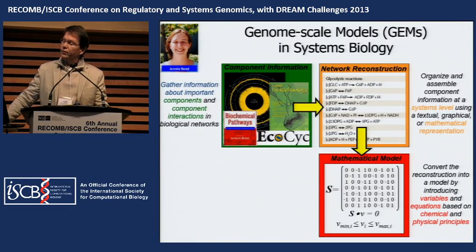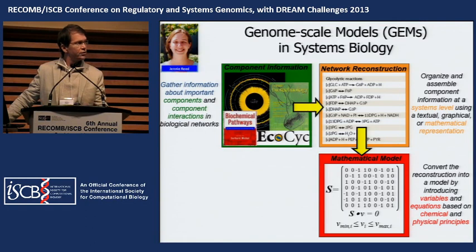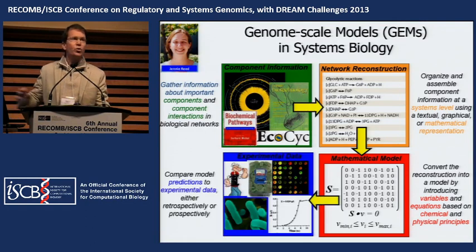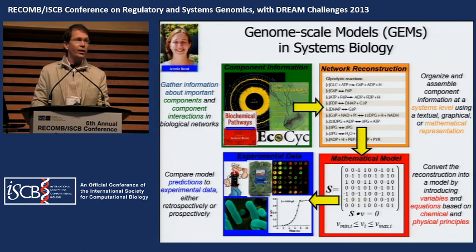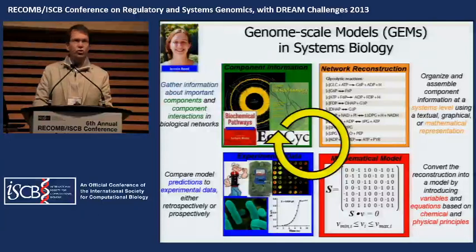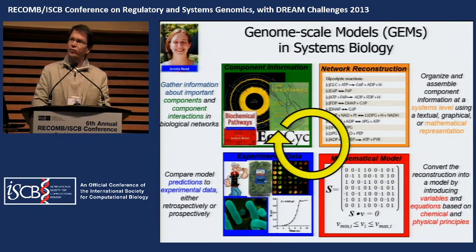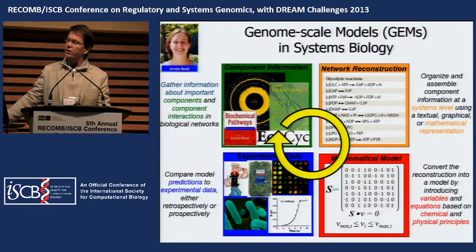Once you have put all that information together, you can mathematically represent it, impose constraints — either fundamental or data-based — then compute phenotypes or phenotypic states using various optimization procedures. Optimizing growth rate is not the only objective you can state; you can state many others. Predictions often fail, and sometimes you're happy when they fail, because that means there is something wrong in your model. There's now a suite of methods to calculate the most likely reason for failure.